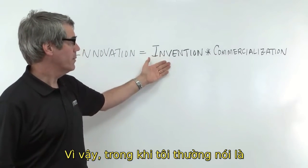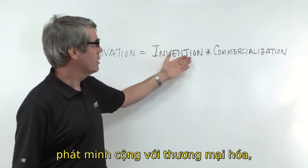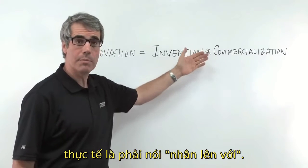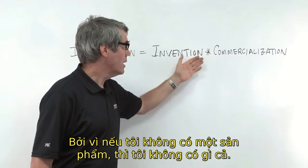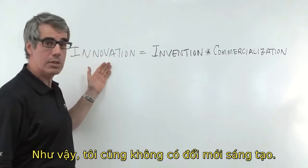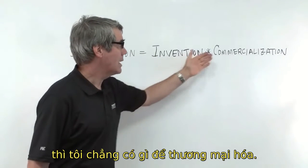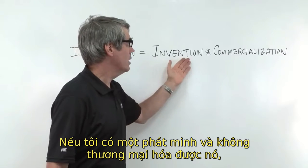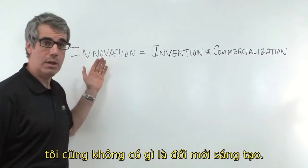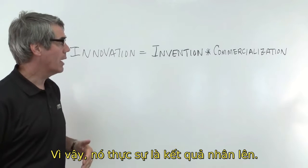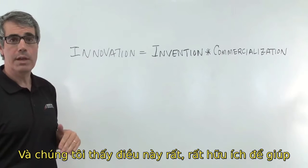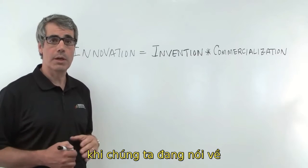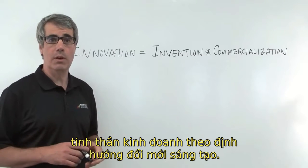While sometimes I used to say invention plus commercialization, in fact it's times — it's a product — because if I don't have one then it's zero and I have no innovation. If I have no new idea I can't commercialize anything, therefore it's zero. If I have an invention and no commercialization, I have no innovation as well. So it's actually a product, and we found this very helpful to explain what innovation is when we're talking about innovation-driven entrepreneurship.